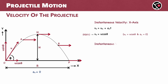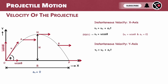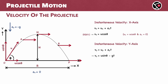Moving to the vertical direction — again, the velocity V is U plus AT. Here, the initial velocity Uy is U sin theta, and the acceleration is minus G. G is the acceleration due to gravity; it is negative because we have assumed the upward direction as positive. So the vertical velocity is U sin theta minus Gt. This vertical component keeps changing — it decreases as the projectile rises from O to A, becomes 0 at the highest point M, and increases again in the downward direction as it moves to point B and finally reaches the ground at point P.